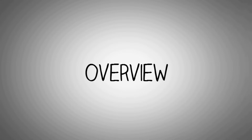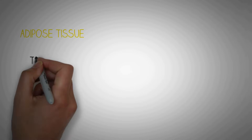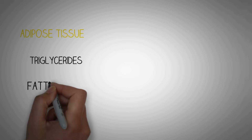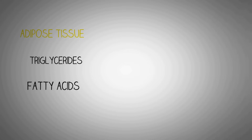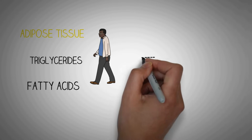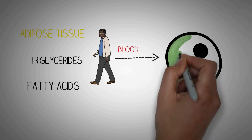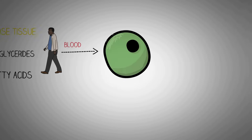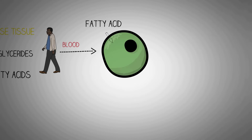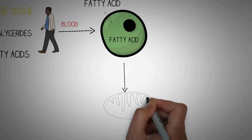Let's have an overview of the process of beta oxidation. The human body contains adipose tissue which consists of triglycerides. The triglycerides break down into fatty acids and glycerol molecules. The fatty acids are distributed all over the human body and enter into the blood, through which they are distributed to virtually all cells of the body that can metabolize fatty acids. The fatty acids then move inside the cytoplasm of the target cells.